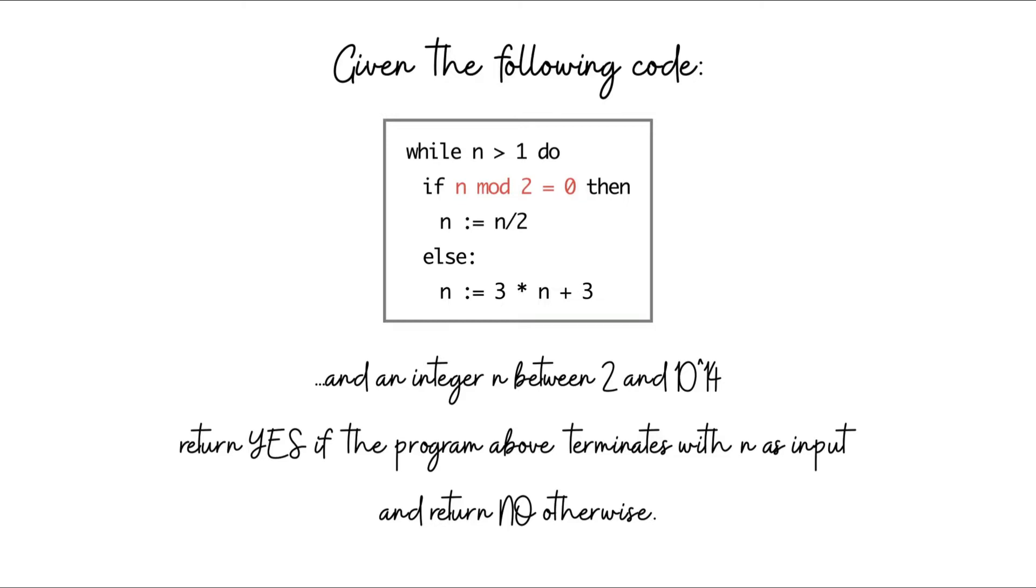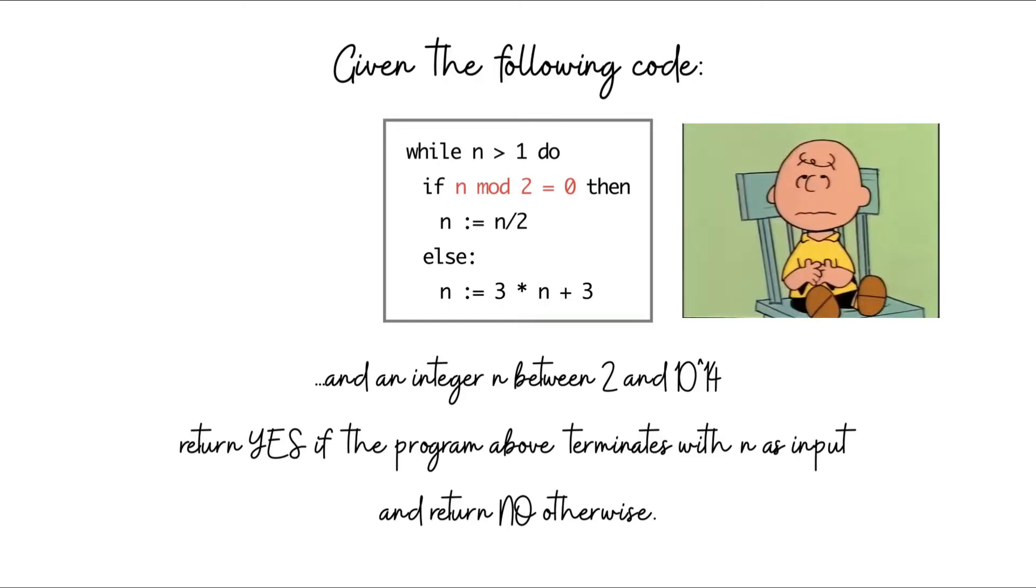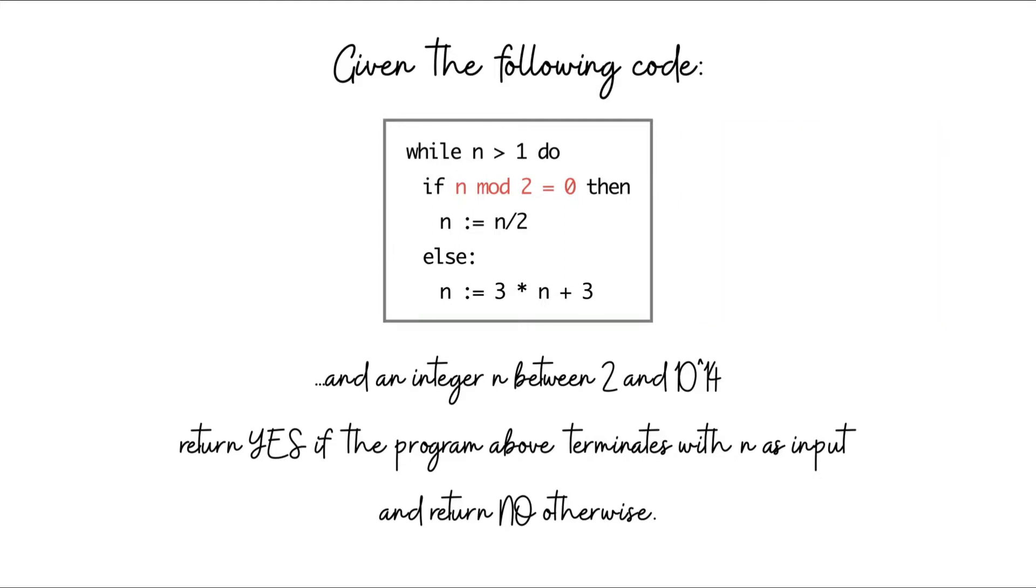Just because your program didn't terminate in the first so many steps, that's not enough evidence to conclude it's never going to terminate. It seems the real task is to identify some pattern on the numbers n for which this code does not terminate, and then use that pattern to answer the question.